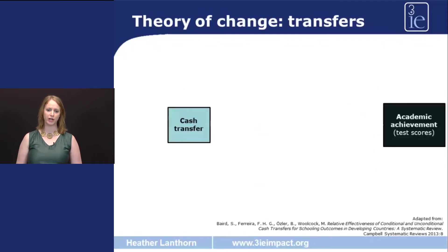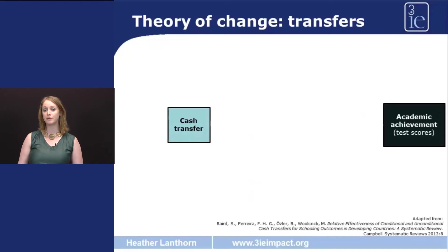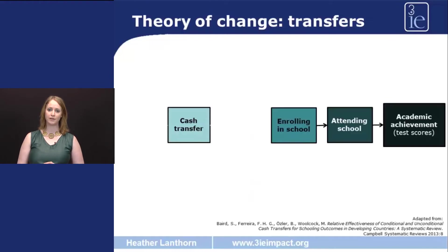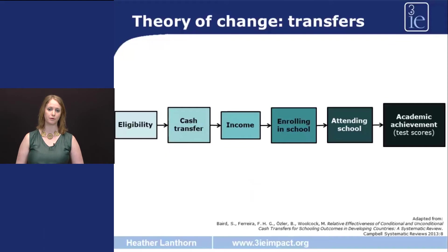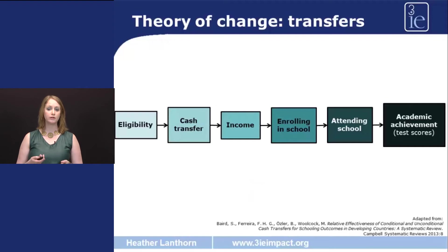So now let's think about the theory of change. Why would we expect a cash transfer to potentially impact on educational outcomes? In order to improve test scores or other measures of academic achievement, children need to be enrolled in school and attend school. Prior to that, we need the link of income between the cash transfer and enrolling in school, which may allow families to cover school fees, uniform costs, and costs of attending school otherwise. Usually with cash transfer programs, there's an eligibility criterion which makes families able to receive these cash transfers. So this is our basic causal chain, though there are moderating factors that make it more or less likely that one link of the chain will lead to the next.